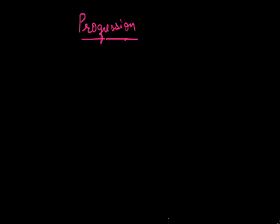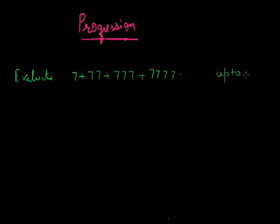Let's discuss a few more problems related to progression which will help you in the examination. Evaluate 7 plus 77 plus 777 plus 7777 and so on up to N terms. Whenever we arrive at this kind of problem — 777, maybe 3033 — there is always a simple approach. We always try to make numbers like 77 into 99-form.